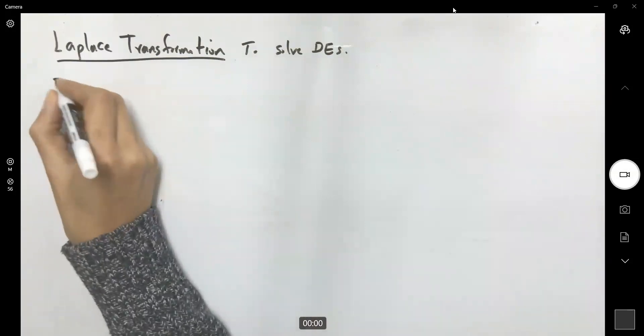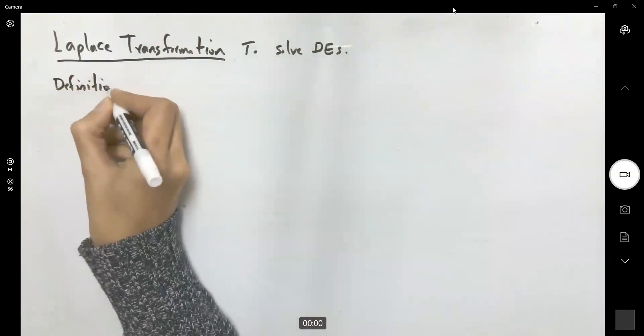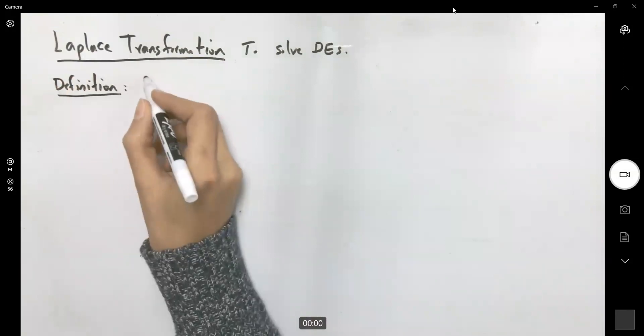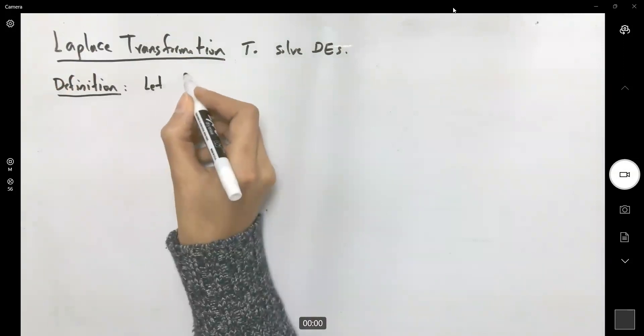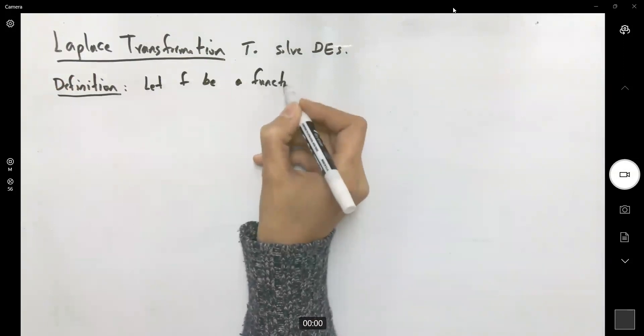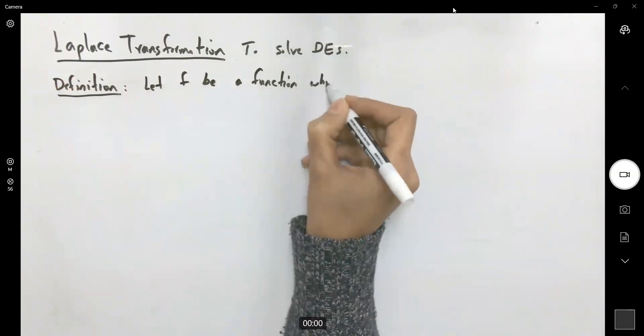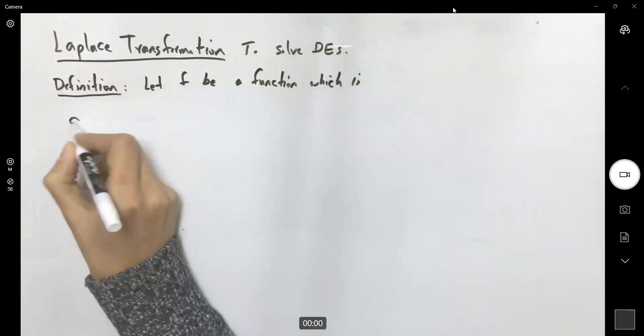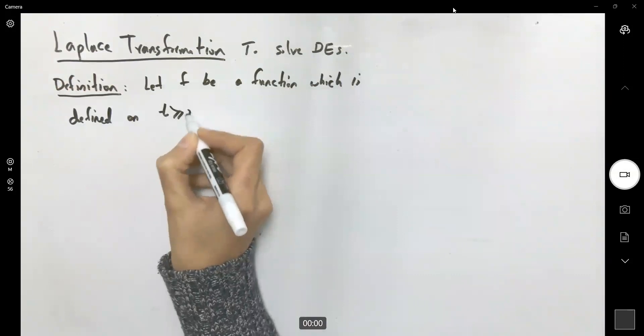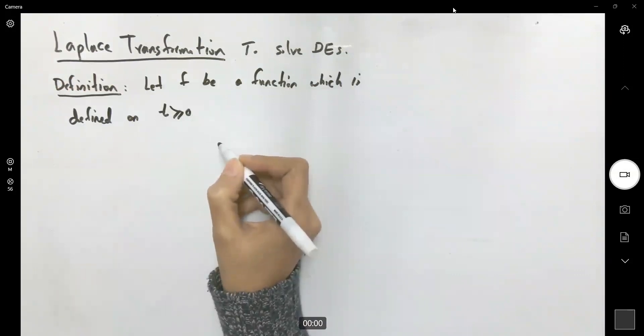Definition. In this definition, we're dealing with function like f, flat f, be a function which is defined on t larger than or equal to zero.